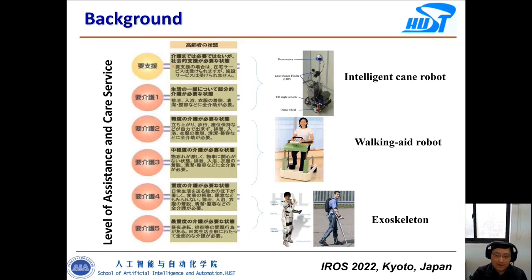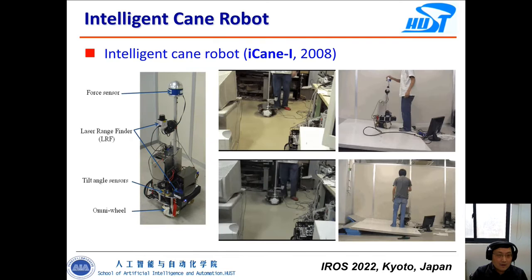In my lab, I developed three kinds of walking aid robots corresponding to these three assistance levels: the intelligent cane robot, the intelligent walker-type walking aid robot, and the exoskeleton.